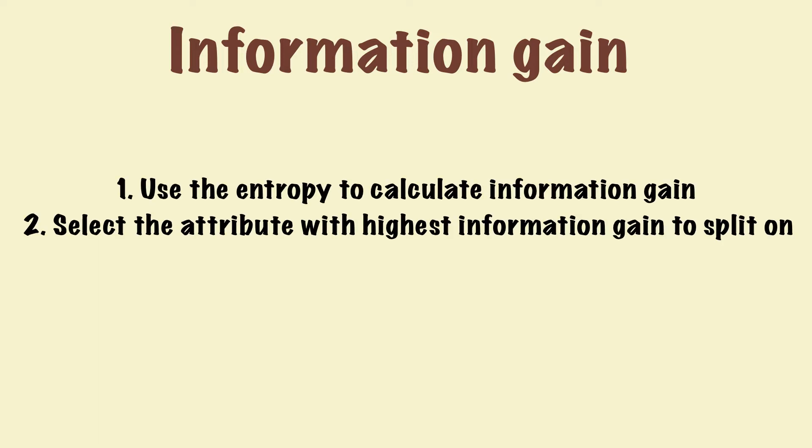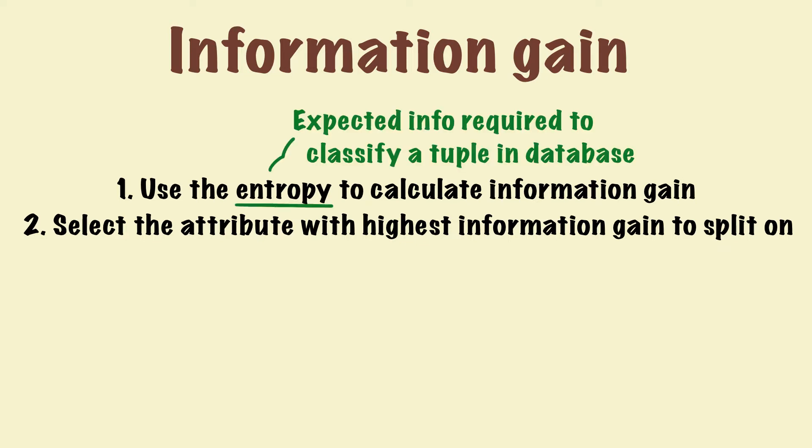To briefly recap, we first use the entropy to calculate the information gain. Then we select the attribute with highest information gain to split on. Entropy is the expected information required to classify a tuple in a database. Therefore, information gain is just the entropy of the whole database minus the entropy of individual attributes.